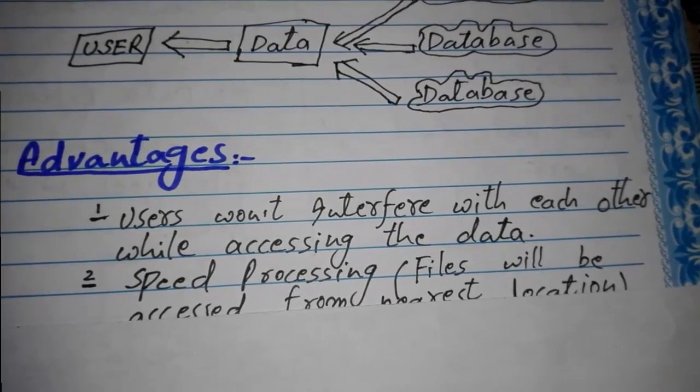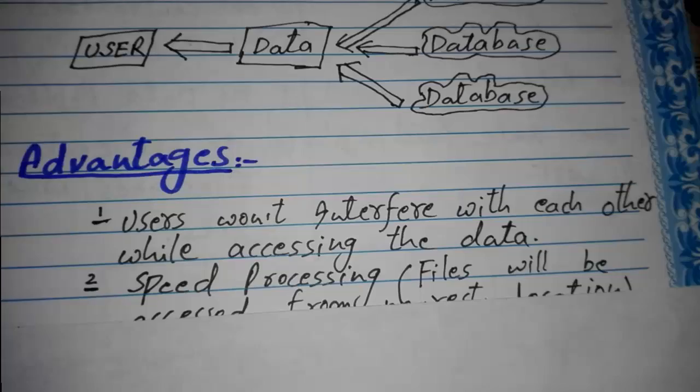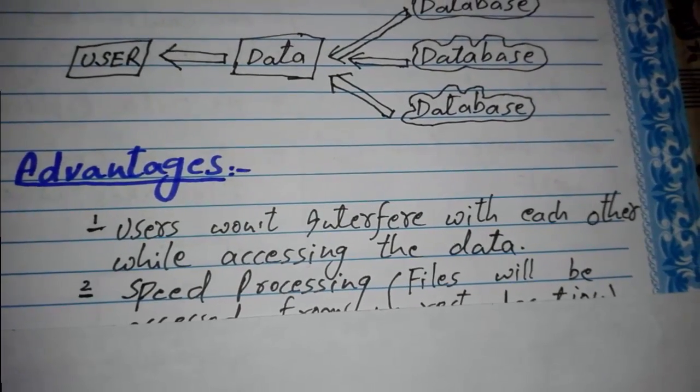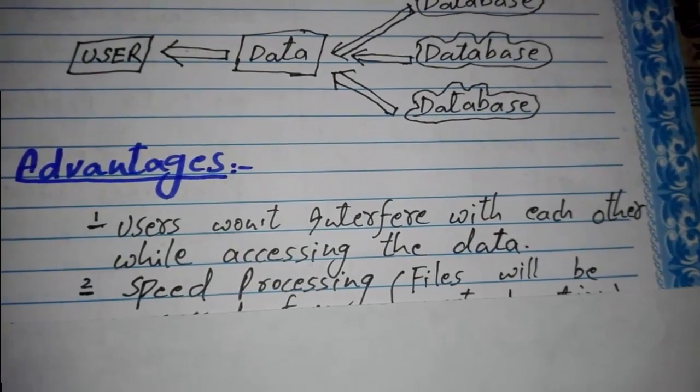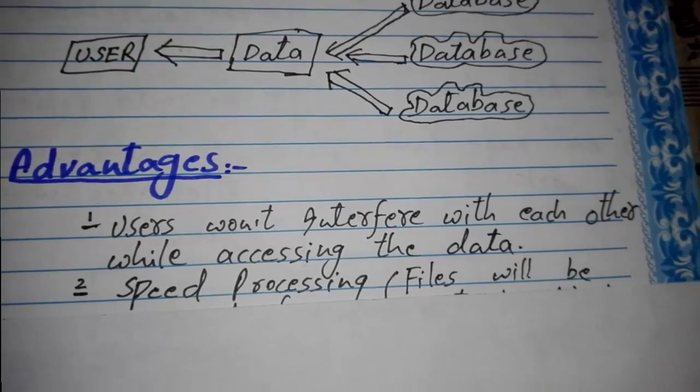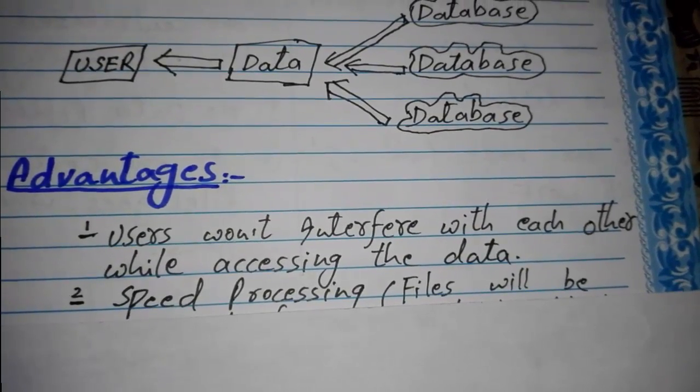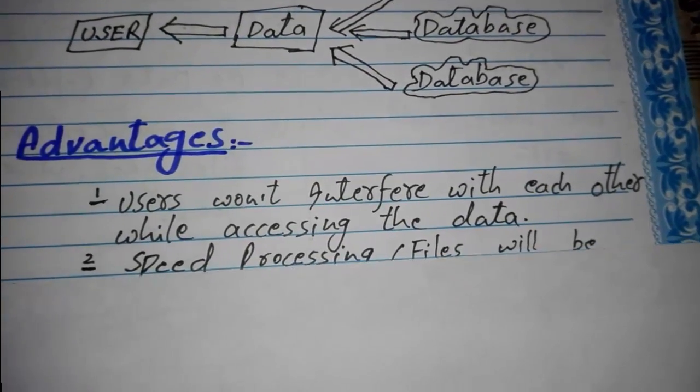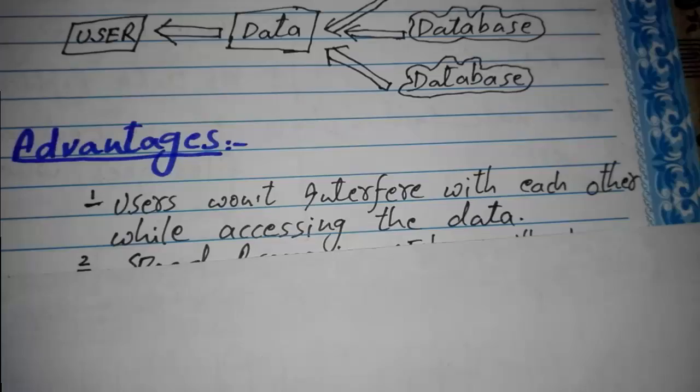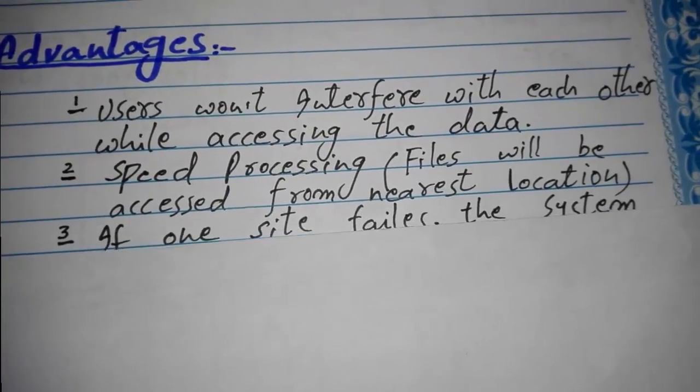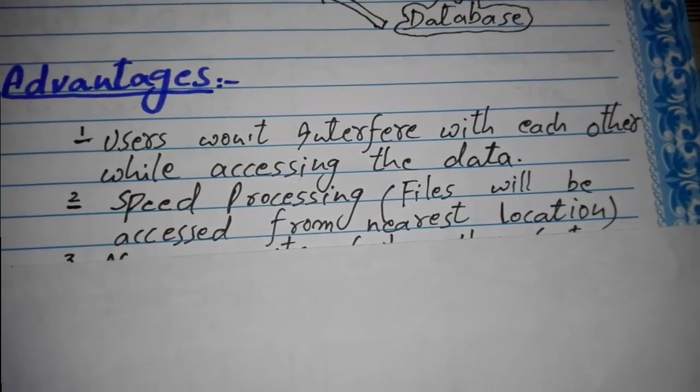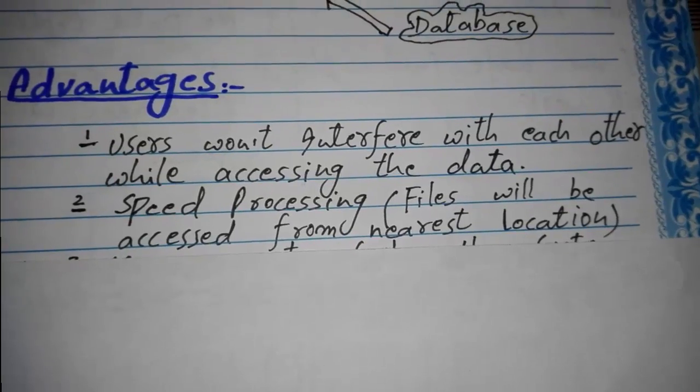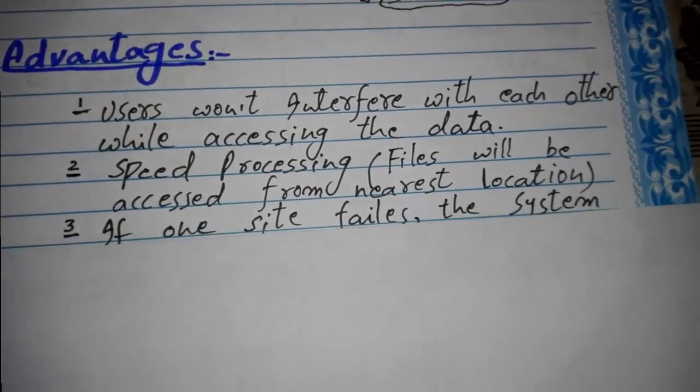What I mean to say is that when a user is going to access or manipulate any data, he will get the data from his nearest location, and in such a way that multiple users will not interfere with each other. This also provides speed processing because the files will be accessed from the nearest location, so the speed will be enhanced.